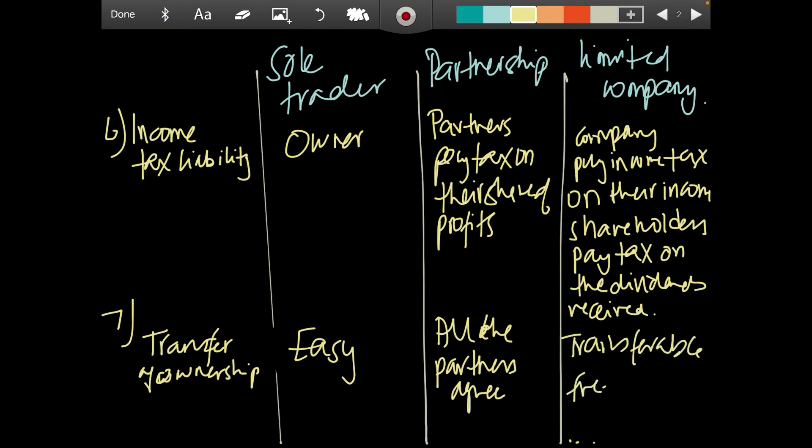So there are seven differences in the ownership types and this can help you in the MCQs.